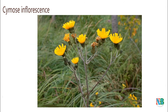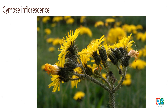In cymose inflorescence, flowers are arranged in a basipetal fashion. As the name basipetal indicates, young and new flowers will be at the bottom. Because of the limited growth of the main axis and continuous growth of axillary branches, the plant spreads laterally, so the new flowers will be at the bottom of the plant.